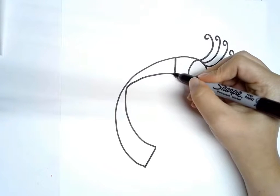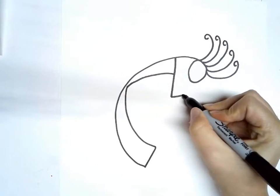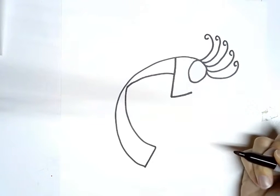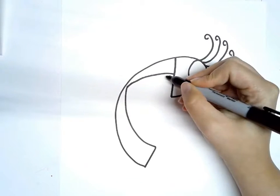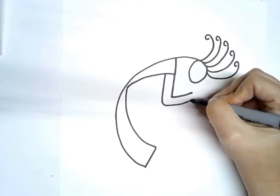Then we're going to draw the arms. So the first arm will come down and bend over like that. And the second arm comes down and bends over like that.